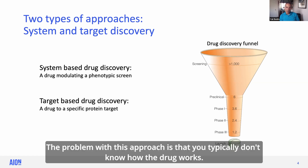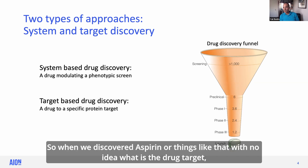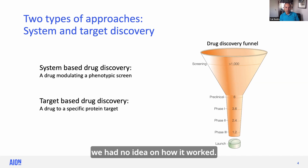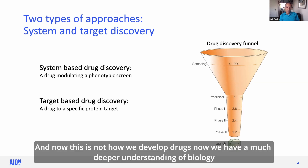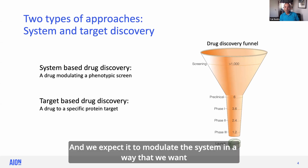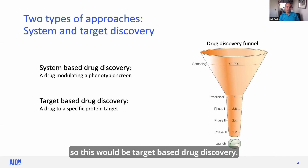The problem with this approach is that you typically don't know how the drug works. So when we discovered aspirin or things like that, we had no idea what the drug target is, how does it work, what's the mechanism. And now this is not how we develop drugs. Now we have a much deeper understanding of biology, and we want to target specific human proteins, and we expect it to modulate the system in a way that we want. So this would be target-based drug discovery.